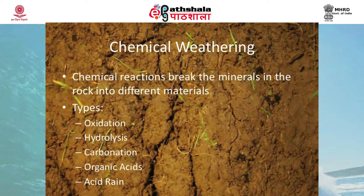Oxidation is the reaction that occurs between a compound and oxygen. The net result is the removal of one or more electrons from a compound, causing the structure to become less rigid and increasingly unstable. The most common oxides are those of iron and aluminium, giving red and yellow staining to the soil, which is quite common in tropical regions that have high temperature and precipitation.